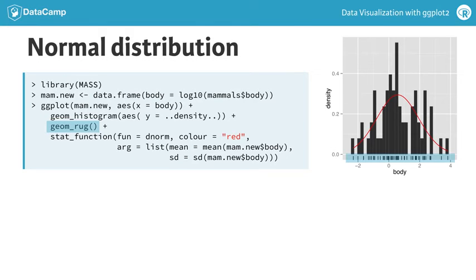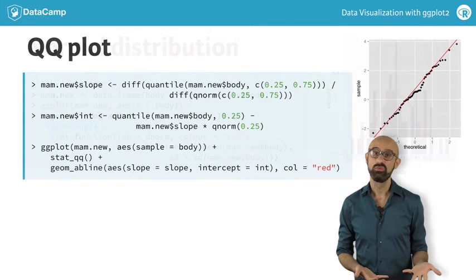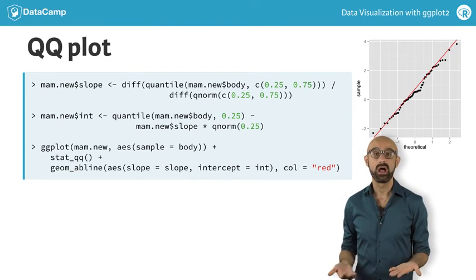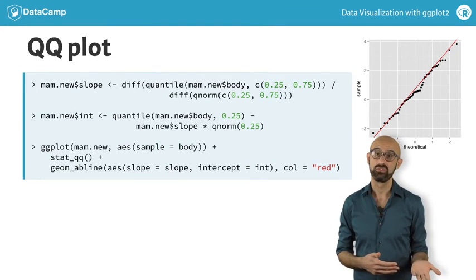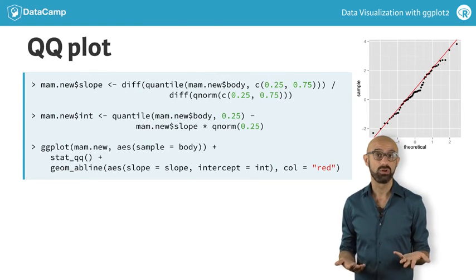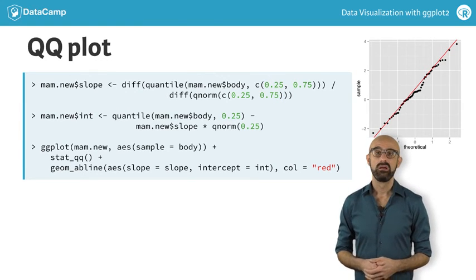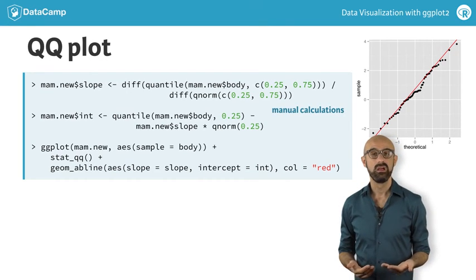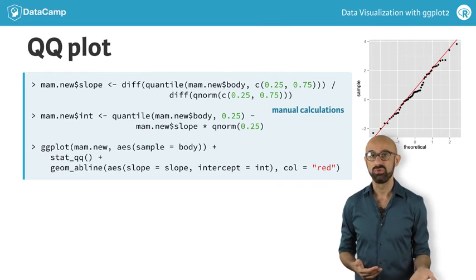Another typical way to determine how well our sample matches the normal distribution is to use a QQ plot. In this case, we plot our sample against a theoretical distribution and draw a line intersecting the scatter plot at the first and third quartiles, the so-called QQ line. Unfortunately, there is no function for drawing the QQ line in ggplot, so we have to make our own calculations. The closer that our data aligns to the QQ line, the more closely it matches the theoretical distribution.